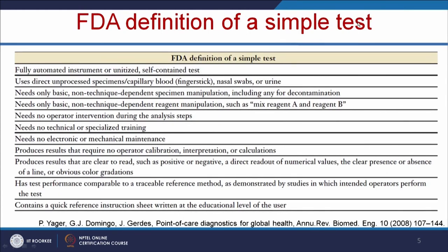According to the FDA definition, a simple test should be a fully automated instrument or self-contained test that allows use of direct unprocessed samples — for example, blood, nasal swabs, or urine samples directly. It needs only basic non-technician-dependent reagent manipulation, such as mixing reagent A and reagent B to get a result. It should not require any technical or specialist training, no electronic or mechanical maintenance, and should produce clear results such as positive or negative. It should also contain a quick reference sheet written at the education level of the user in simple language.